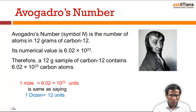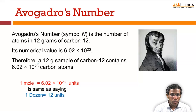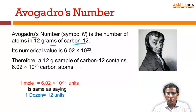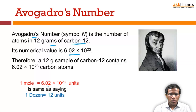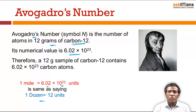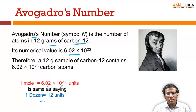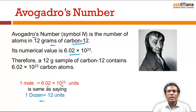Avogadro's number is 6.022 × 10²³ particles or units. It is simply the number of carbon atoms present in 12 grams of C-12 isotope. One mole equals 6.022 × 10²³ units — the same as saying one dozen equals 12 units. Just as one dozen bananas contains 12 items, one mole of any compound contains Avogadro's number of units.